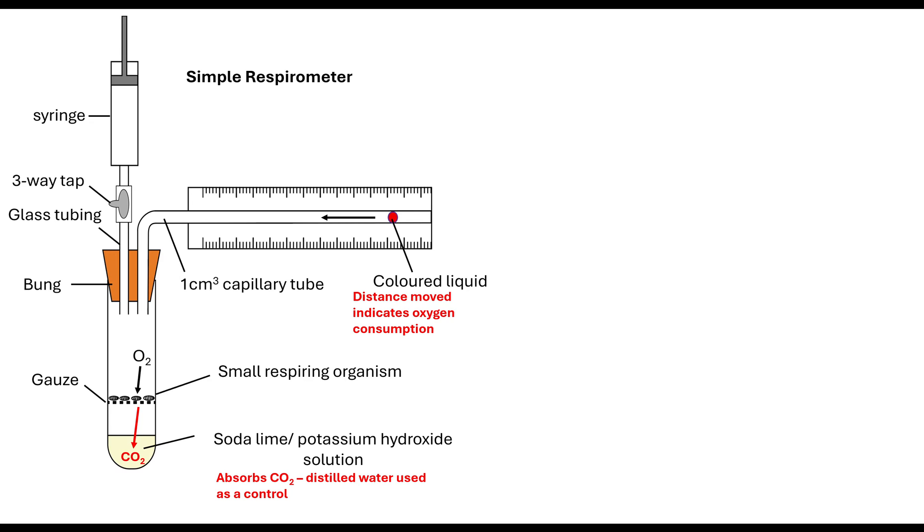And so to be able to repeat this, what you would do is you would use your three-way tap to push in more air, which would therefore push your coloured liquid back to its original position for you to start the process again. So there's some key bits of information that are about the application skills of how to do practical situations if they're going to give you a question like this.